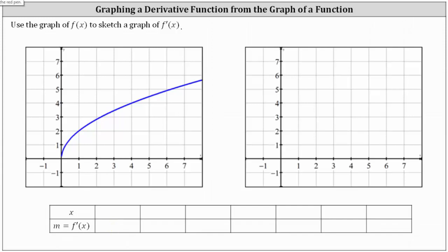Let's begin by sketching the slope of the tangent line at x equals one. The slope is equal to the rise over the run, or the ratio of vertical change to horizontal change. From the point of tangency, if we go up approximately 1.25 and right one unit, we find another point on the tangent line. The ratio of vertical to horizontal change is 1.25 divided by one, so the slope of the tangent line at x equals one is 1.25. We record this, giving us the point (1, 1.25) on the graph of f prime of x.